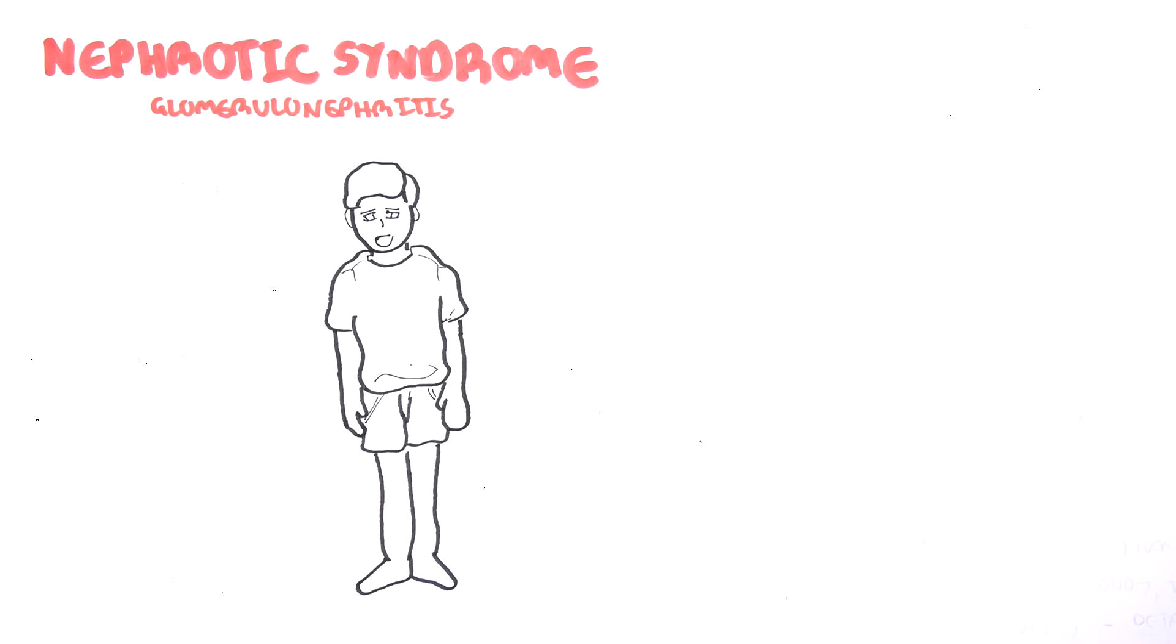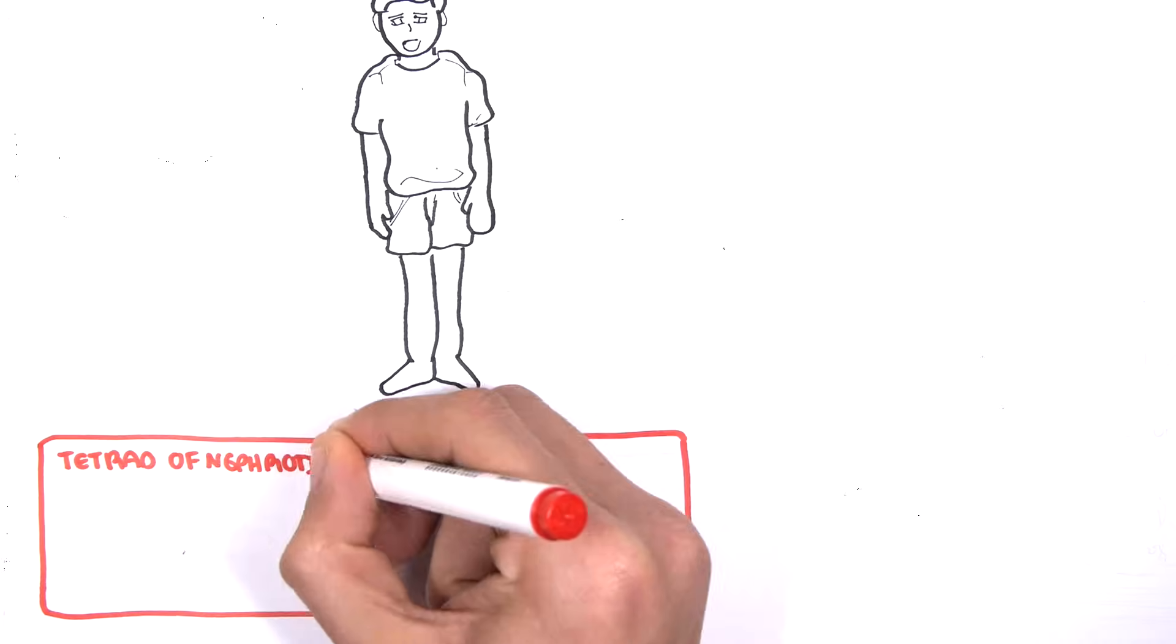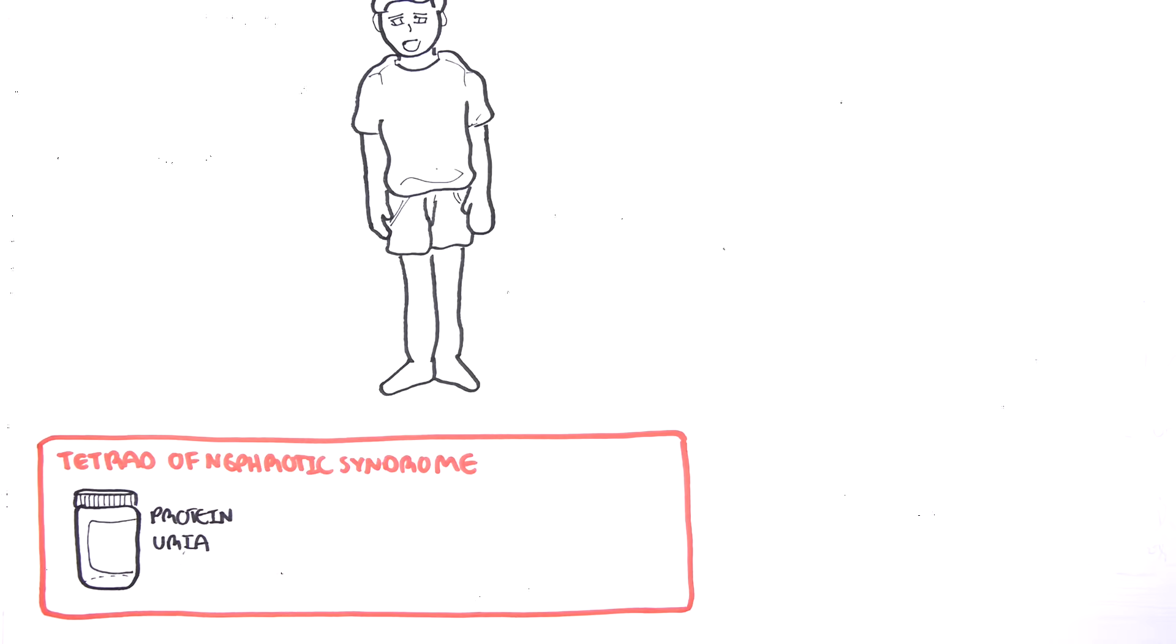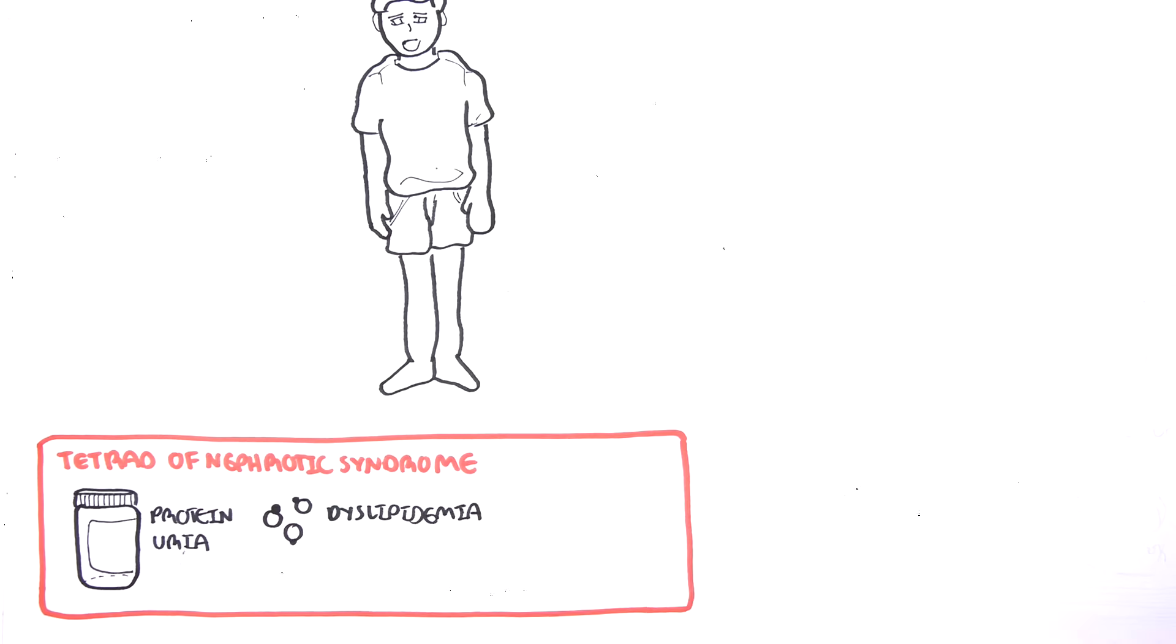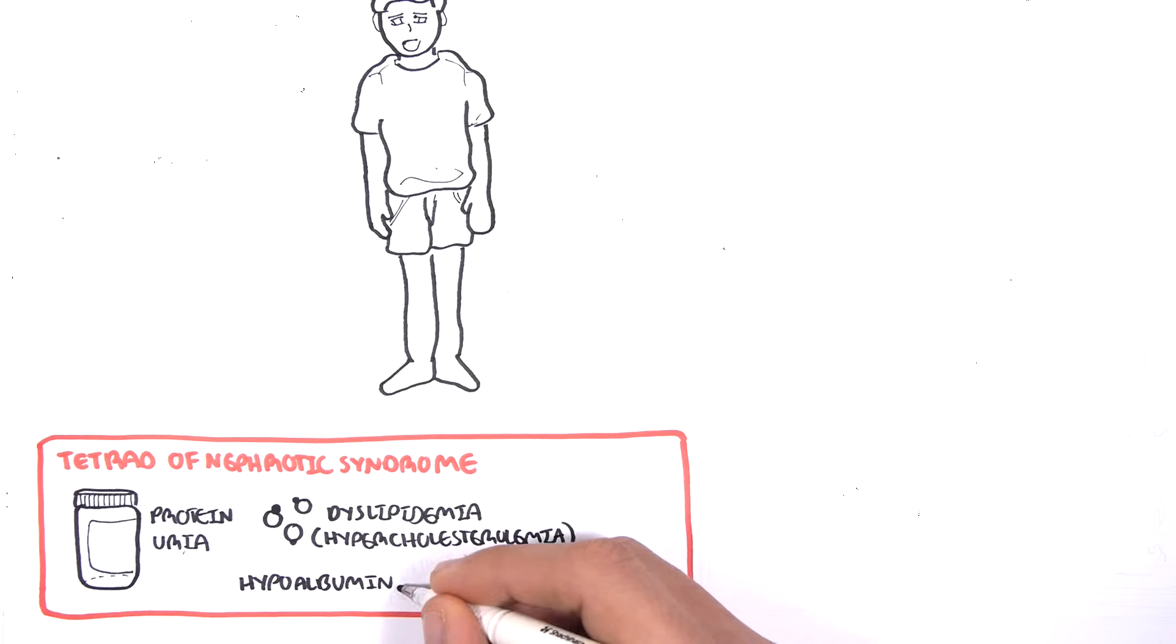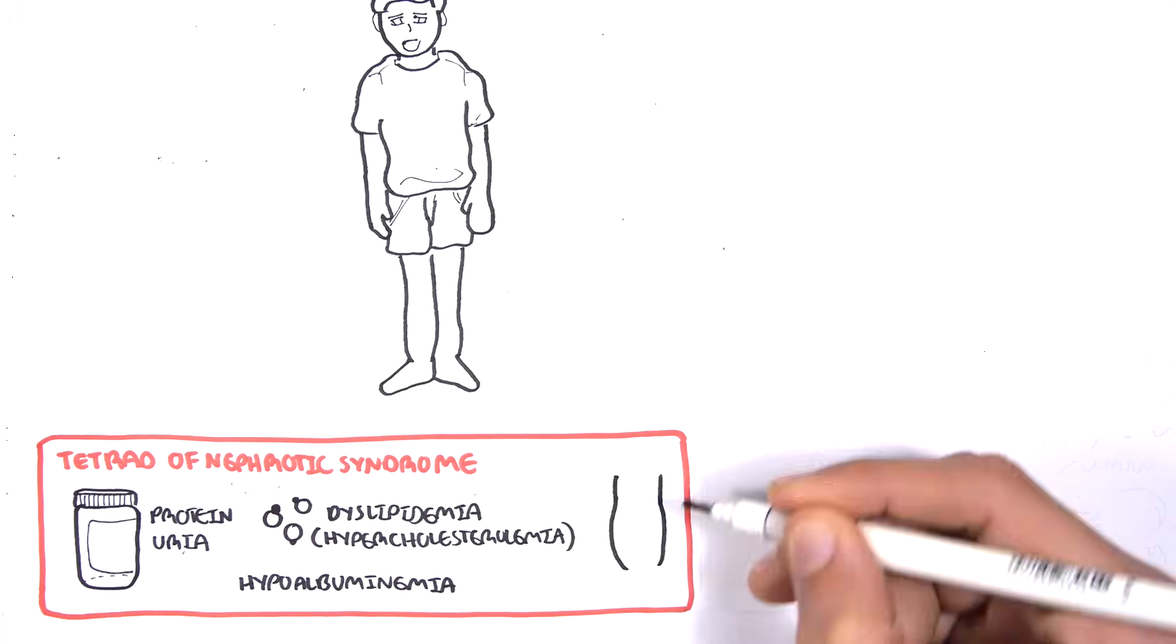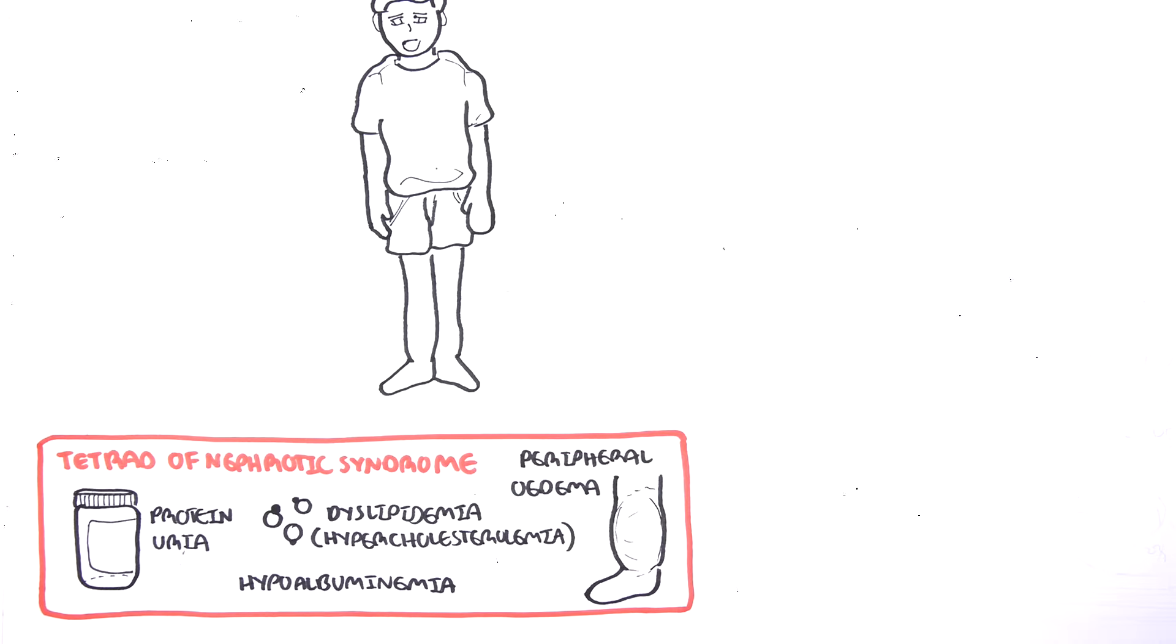Nephrotic syndrome presents as a tetrad of manifestations. This tetrad is proteinuria greater than 3.5 grams in 24 hours, dyslipidemia, more specifically hypercholesterolemia, hypoalbuminemia, and peripheral edema.